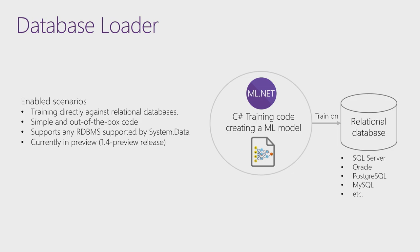Let's see what's new in ML.NET. First is the database loader. With just three or four lines of code, you can access a database and use it for training. It streams data — even huge amounts — and uses it for training your model as needed. You can use it with SQL Server or any relational database supported by System.Data — Oracle, PostgreSQL, MySQL, etc. This is in preview but has been used by customers for a few weeks.